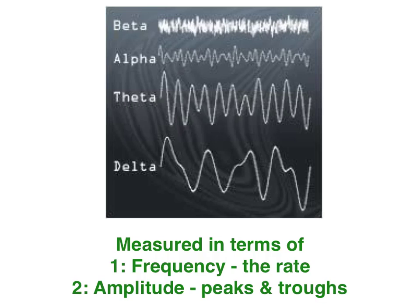It measures two parameters: frequency, which is the rate per second, as well as amplitude — the variations in the peaks and the troughs.